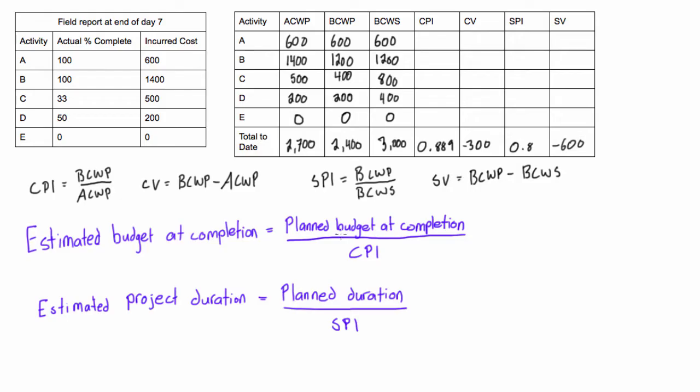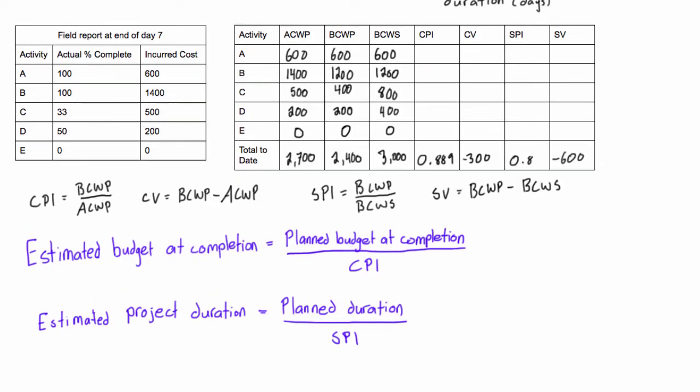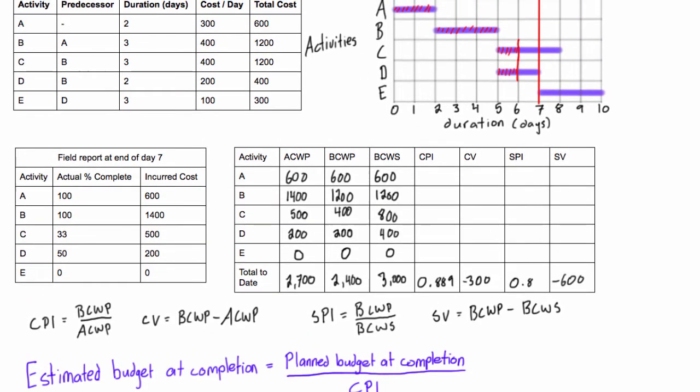First of all, if we want to solve this we need to know what the planned budget at completion is. If we go back up to our table of dependencies here we can see that we had five activities and we know the total cost of each activity. We expect the total project cost to be the sum of all of the completed activity costs. If we add up 600 plus 1200 plus 1200 plus 400 plus 300, we get a total cost of $3,700.